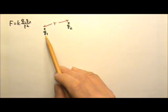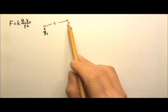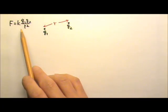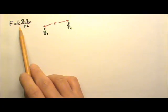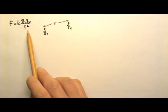If we have two point charges q1 and q2 a distance r away, the electric force between the two point charges can be found using Coulomb's law: k q1 times q2 over r squared.